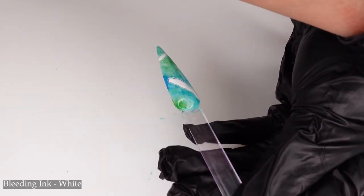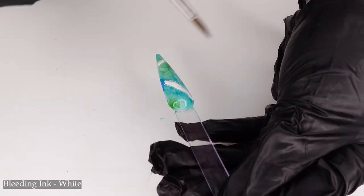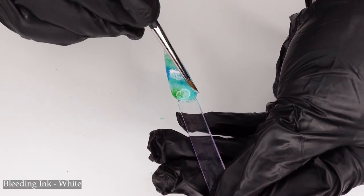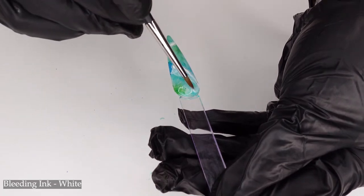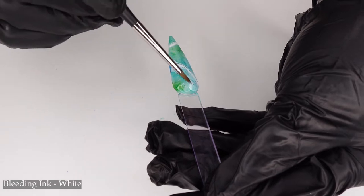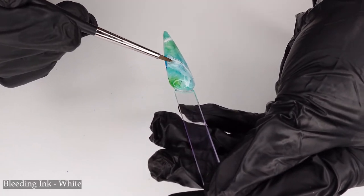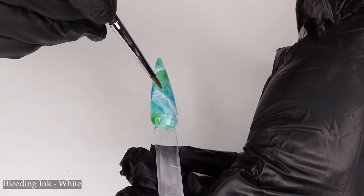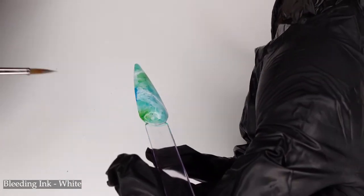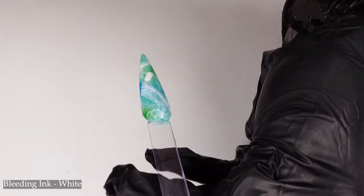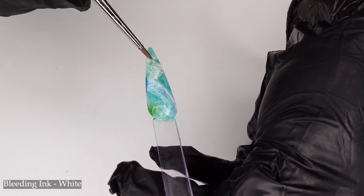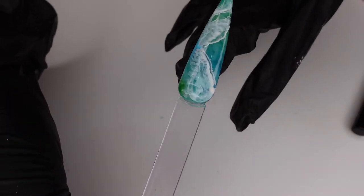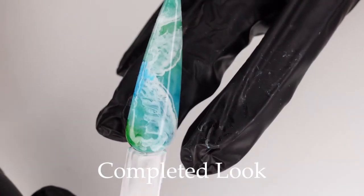Take my pointy brush, dip it in, and then just spread that around, mostly focusing on just one side to kind of create that, like an ocean almost. I'm going to add one more. Top coat and cure. Look at how that green and blue blended together.